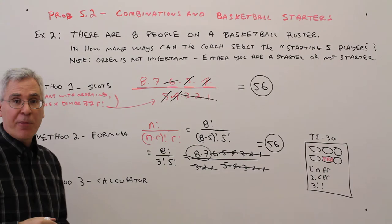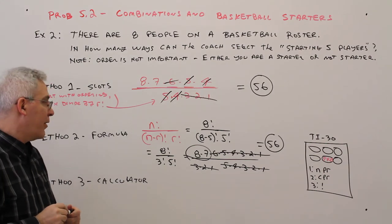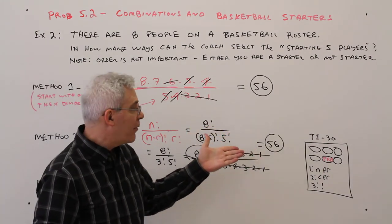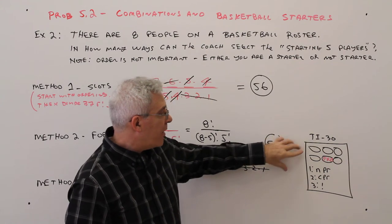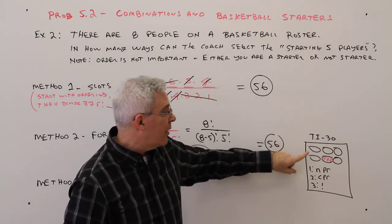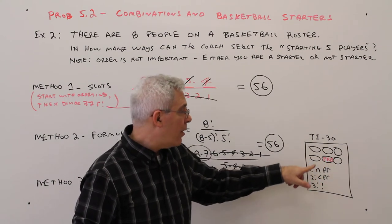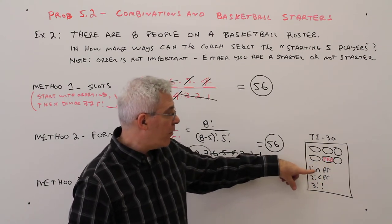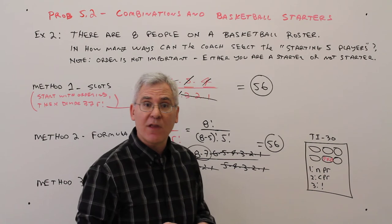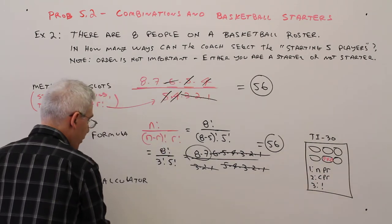Okay, and the third method is just pressing buttons on your calculator. So, once again, with a TI-30, in the second row from the top, in the second column over, is the probability key. And then you're going to get options for permutations, combinations, and factorials. So just to show you the keystrokes,